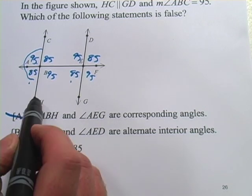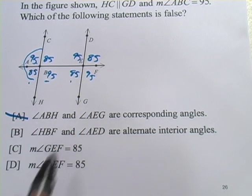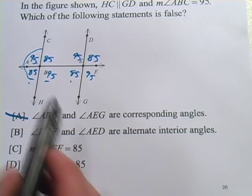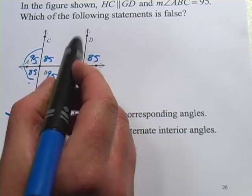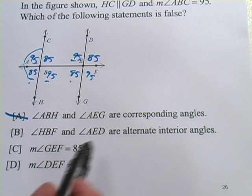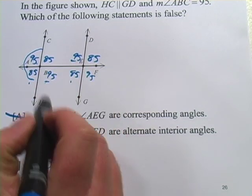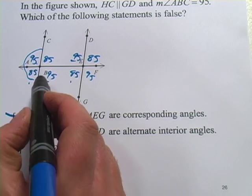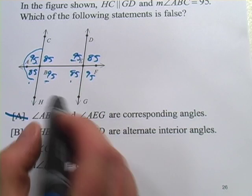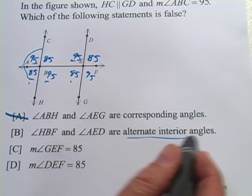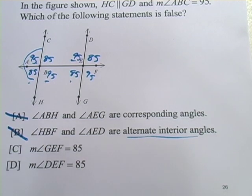B, HBF, so this angle right here. And AED, AED, so this angle right here, are alternate interior angles. Well, yes, they're interior, they're on the inside between the two parallel lines. And they're not right next to each other, they're crossing each other. So these are alternate interior angles. So that's true, not what we're looking for.